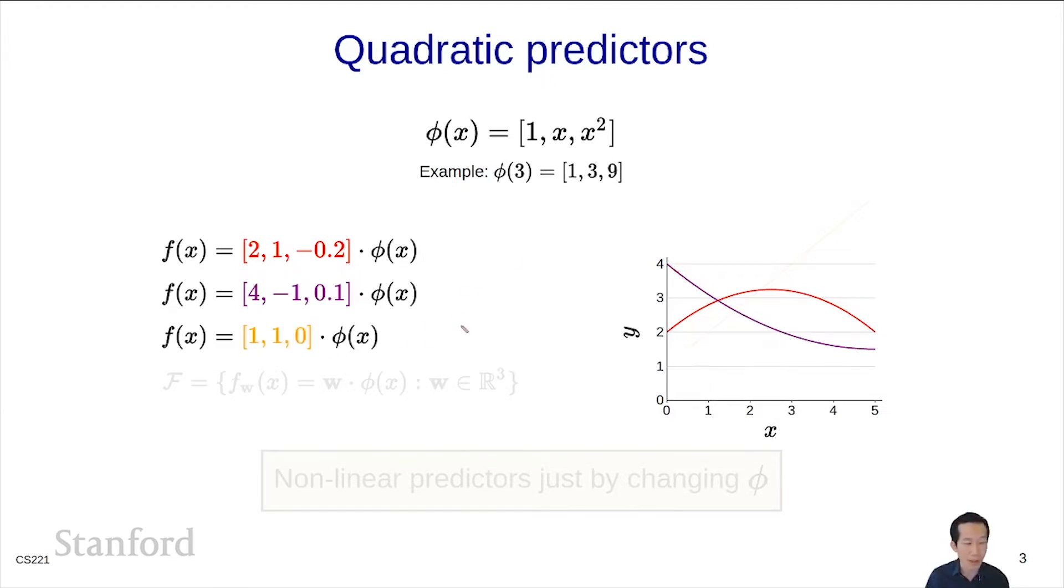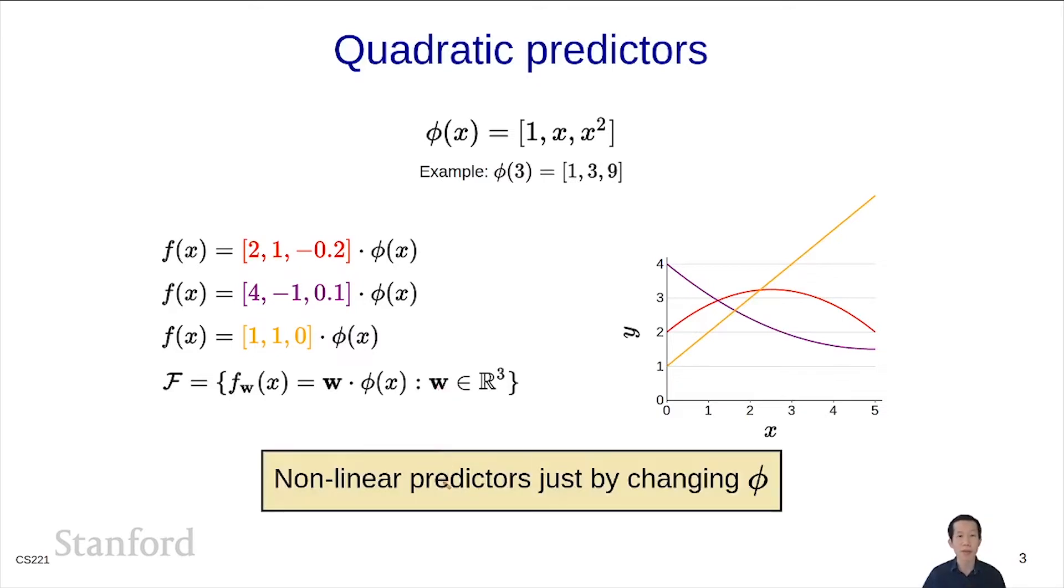Here's another one, [1, 1, 0]. What does this one look like? This one just looks like a line because we've used a zero weight on this x² term. So it just reduces to a linear predictor. In general, we can define a family of all quadratic predictors by ranging the weight vector over all three-dimensional vectors. This is our first example of getting a nonlinear predictor, in particular quadratic predictors, just by changing φ.